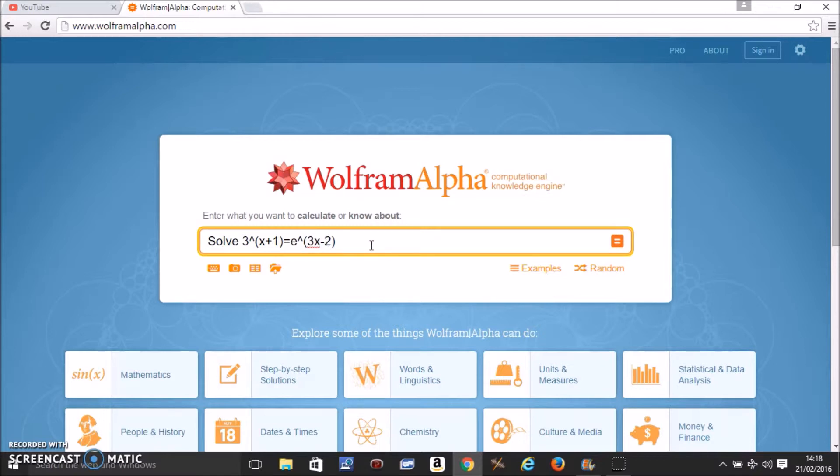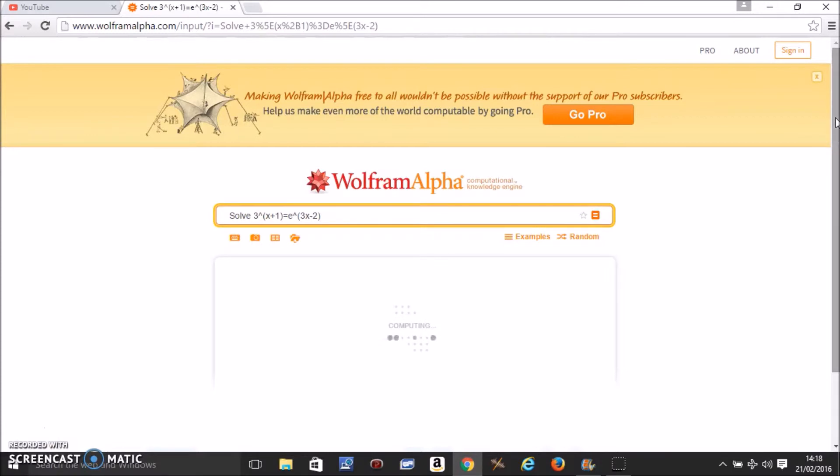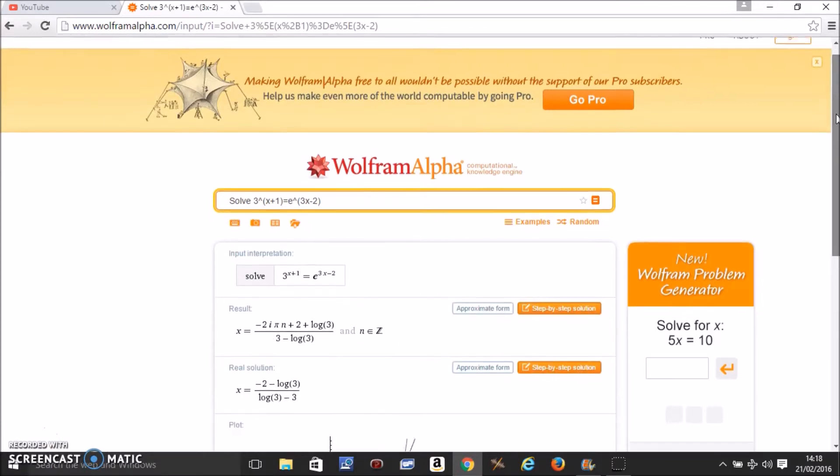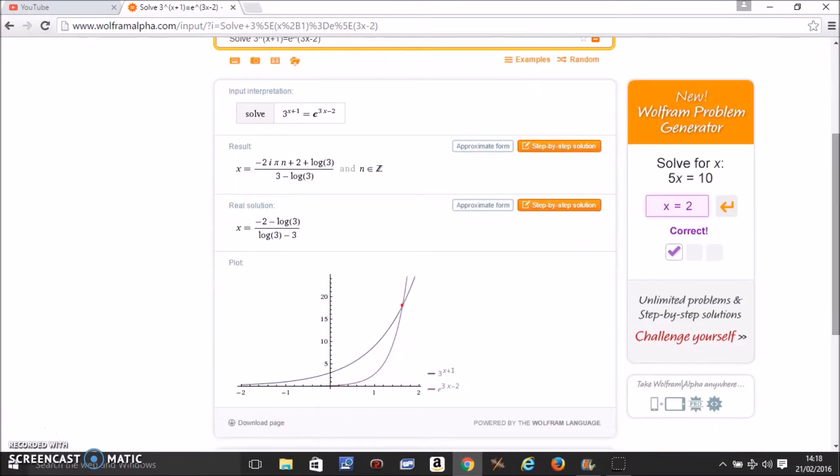e to the power 3x minus 2. All you have to do is plug in the exponential equation like this and press equals. Just wait a second and the solution will come on the output. This is the solution we are interested in, the real solution.